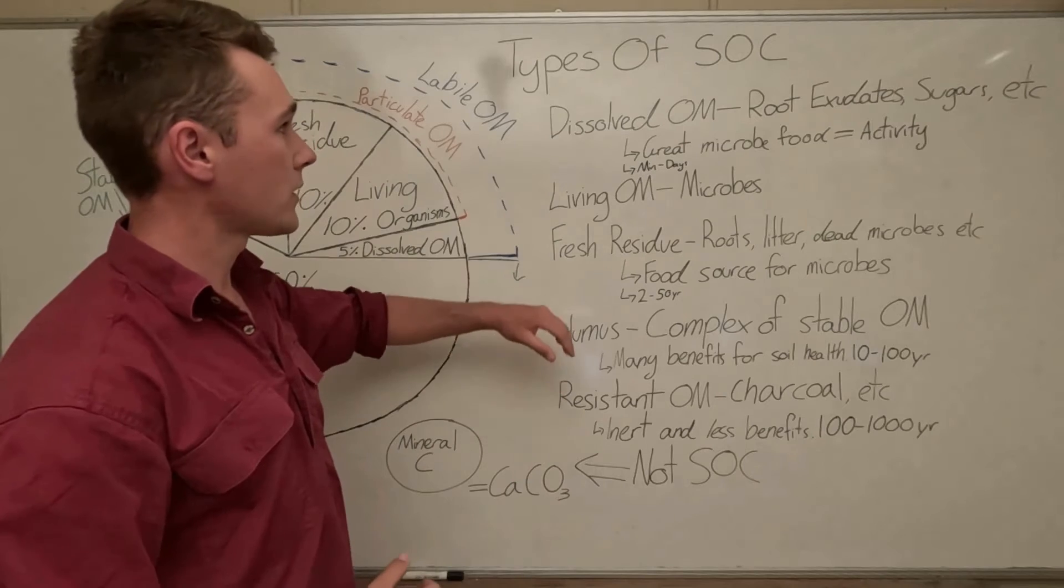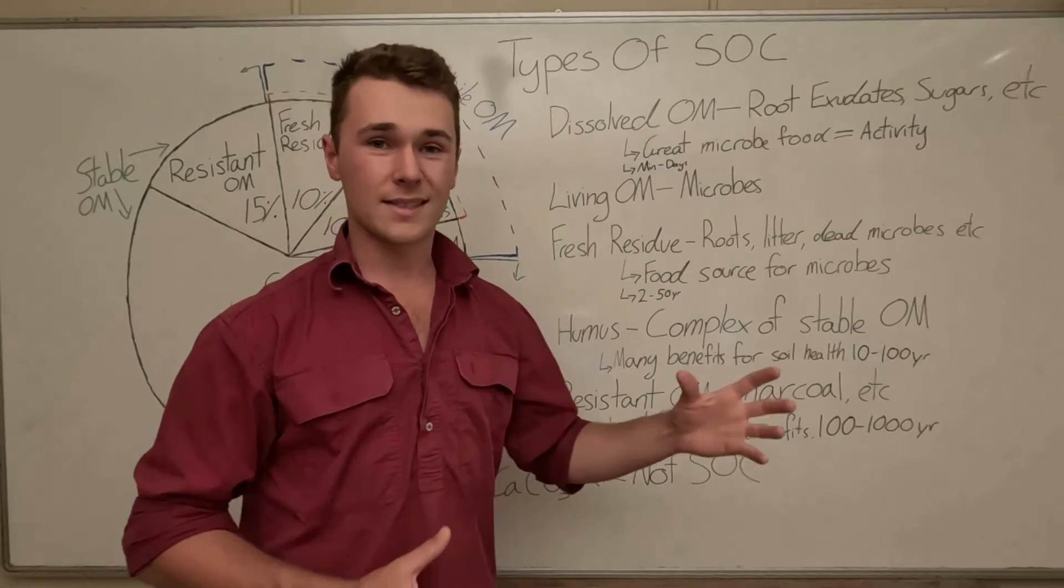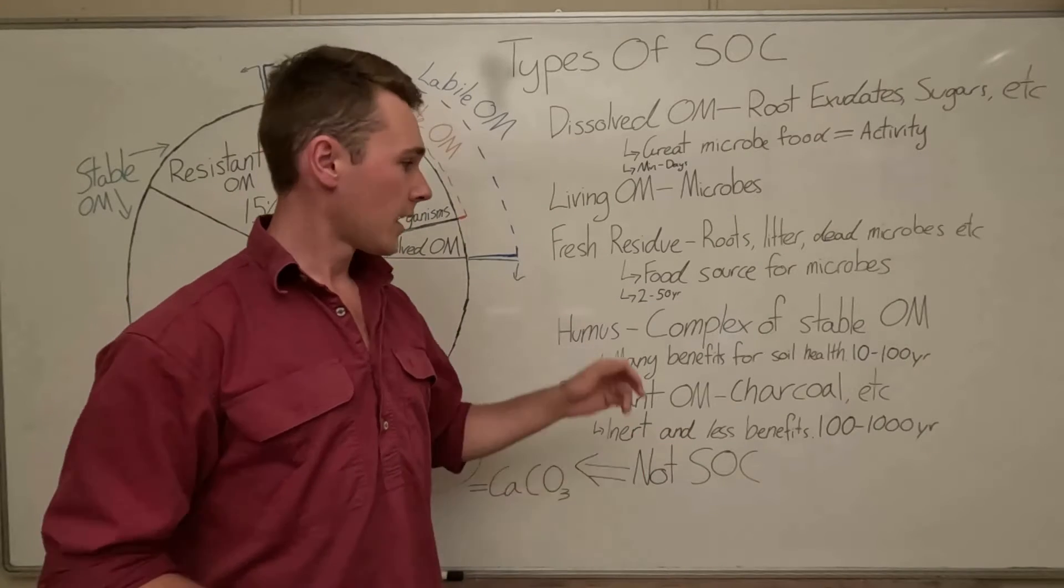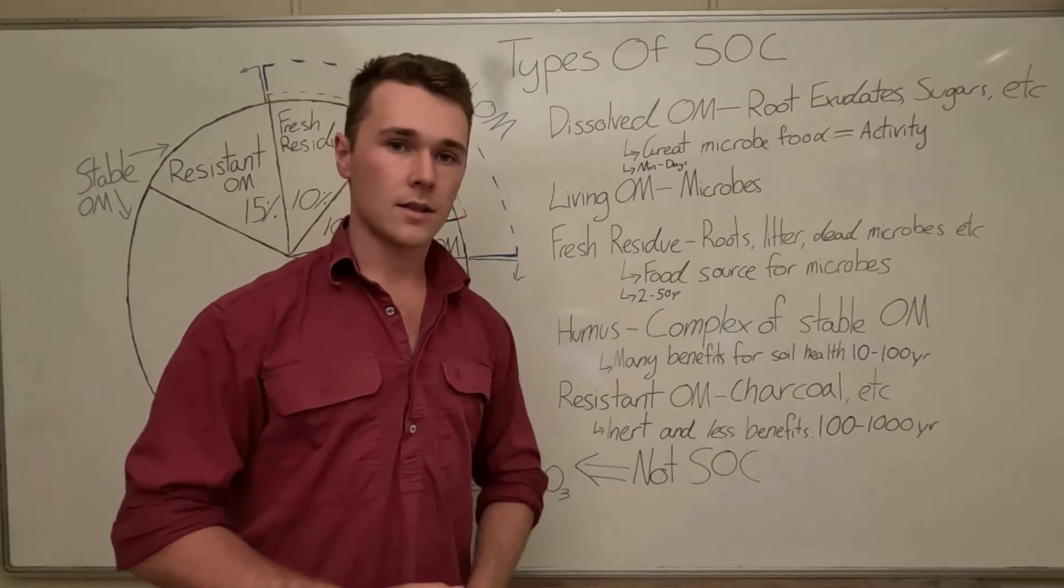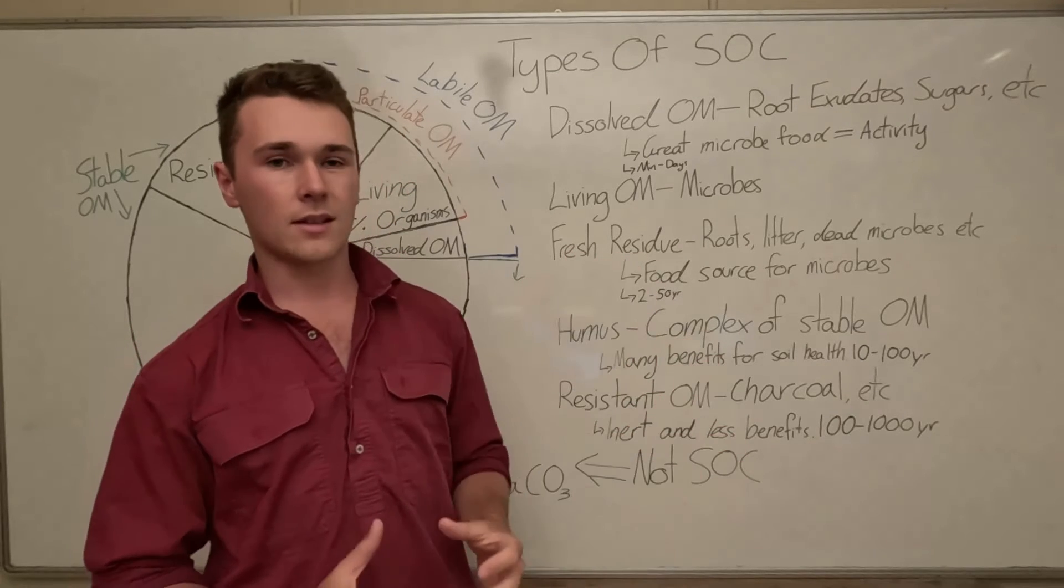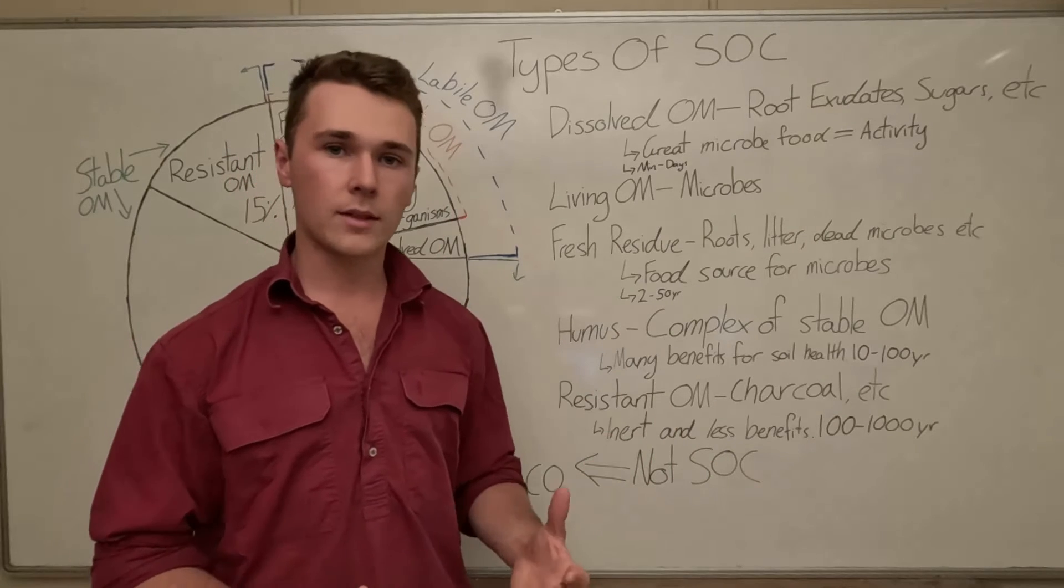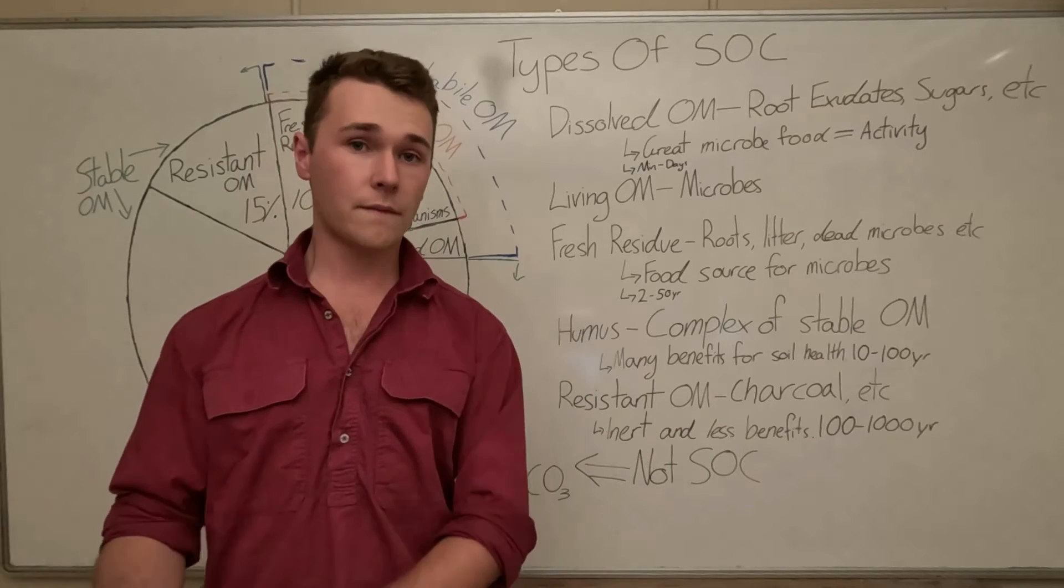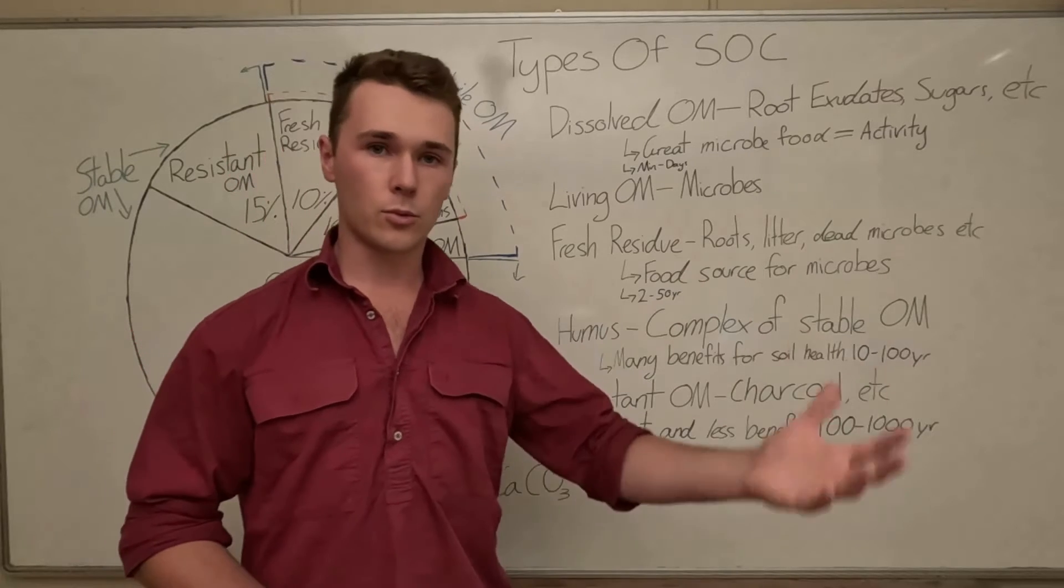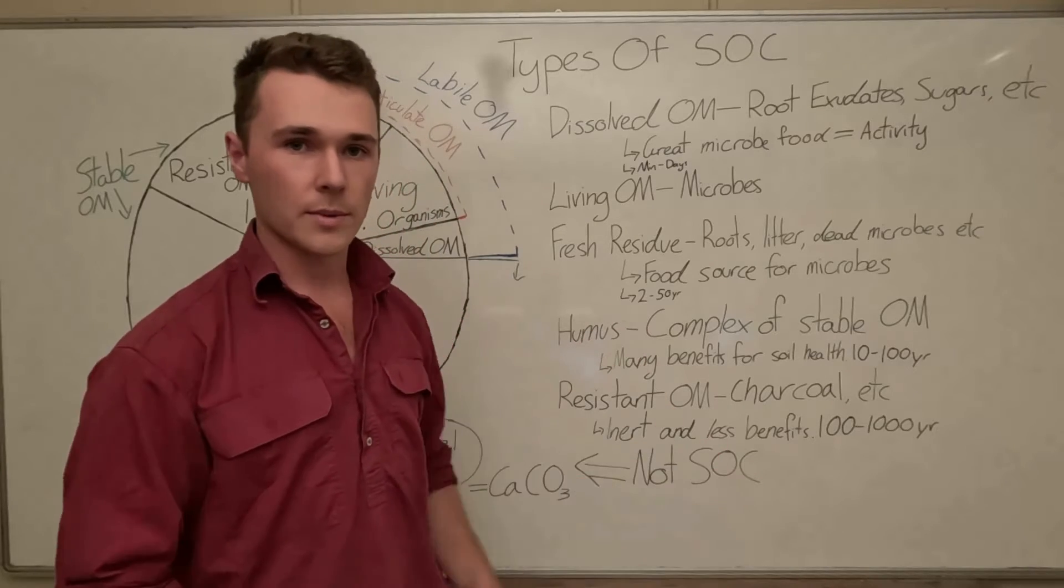Again this has a really fast turnover so the dissolved organic matter has a turnover of minutes to days so very quick. Our fresh residue is a bit longer and that's about 2 to 50 years. It depends on what the material is so if it's like legume material or if you have a cover crop of legumes that's going to decompose a lot faster because of the high nitrogen component than say a hardwood which might take a full 50 years or even more to break down.